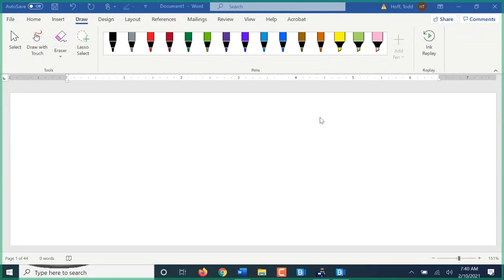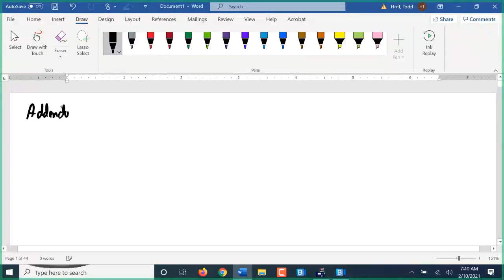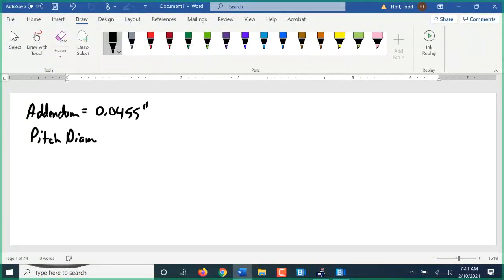We'll do maybe a couple of them here quick. Let's do number 43, not 42. We are given addendum A = 0.0455 inches, and the pitch diameter D = 1.0455 inches. And we need to find number of teeth N.